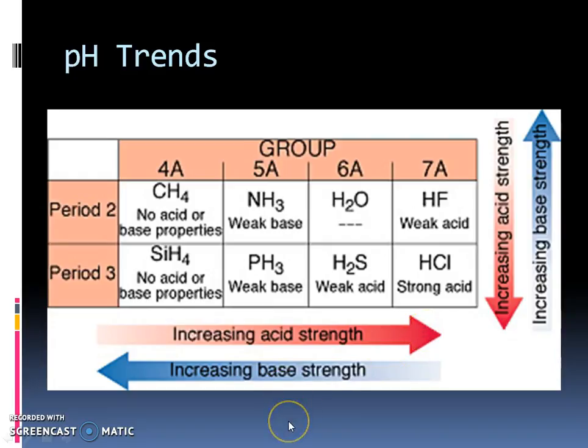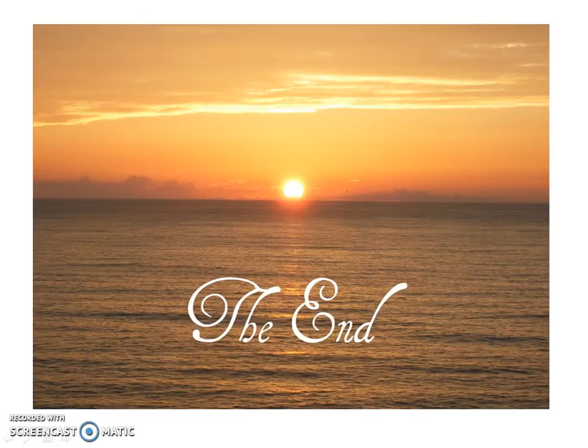And again, those reactions are going to be more important later, but this is going to be the trend where the more nonmetallic you are, the more acidic you'll be. And again, it's because of that reaction that I just showed you and made sure that you need to understand it. And metals tend to make more base solutions. So metallic oxide, again, the more metallic characteristic you are, the more basic pH level you will be. Okay, see you in class.